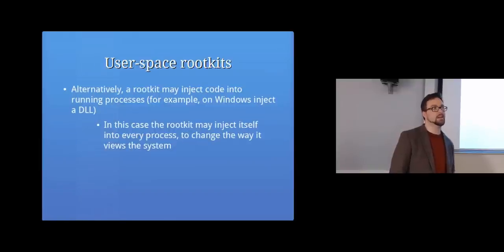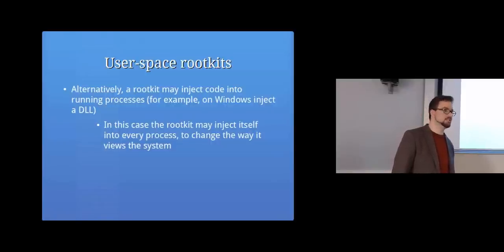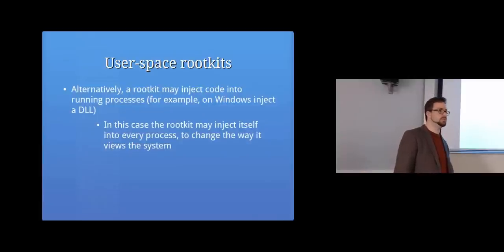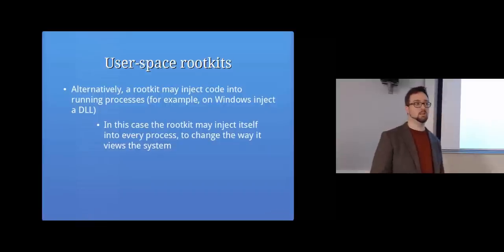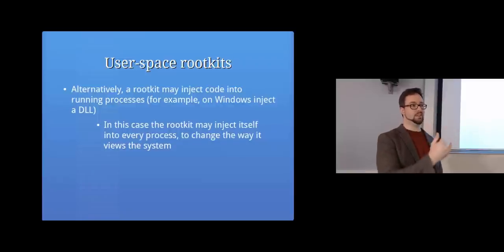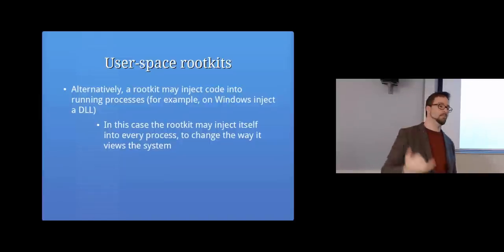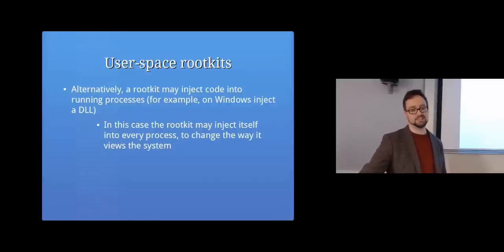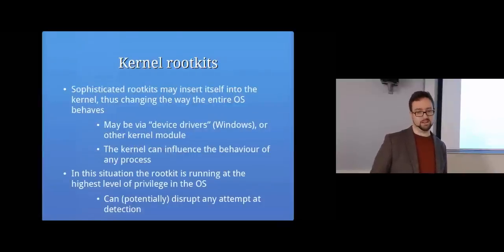A rootkit might also inject code into a running process — injecting a DLL into a running program to change its behavior, even though the program itself and its libraries haven't changed. You'll have seen this in DSL when using an interpreter payload: you can actually migrate the payload into different processes, migrating the misbehaving program into any process currently running on the system.